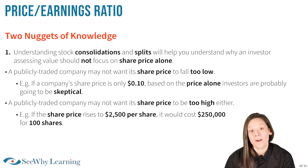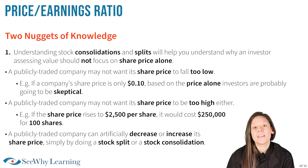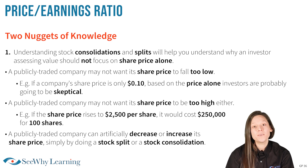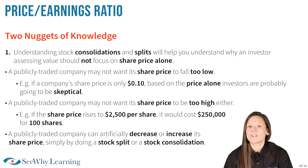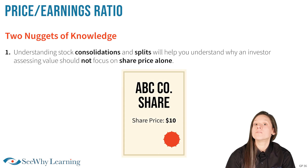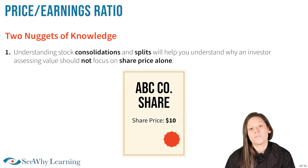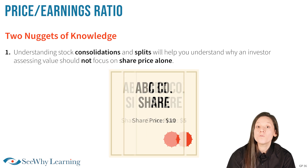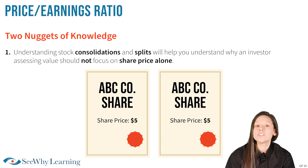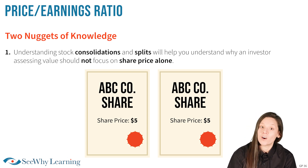Here's the interesting part. A publicly traded company can artificially decrease or increase its share price simply by doing a stock split or a stock consolidation. For example, if a single share has a market value of $10, the company could lower the price to $5 by doing a two-for-one stock split. If you split a $10 share into two, it would become two shares worth $5 each.